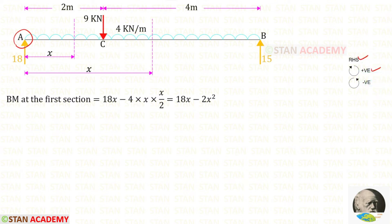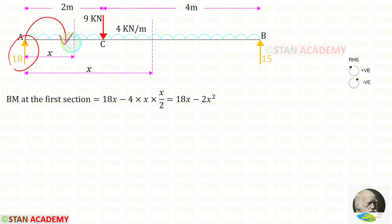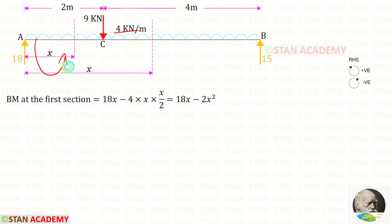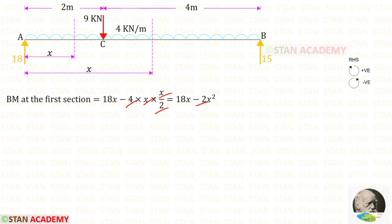For the first section, the moment about it: Ra is acting clockwise so it is positive and the distance is x, giving 18x. The UDL of 4 kN/m is acting anti-clockwise, so it is negative; for the UDL we multiply with the distance and distance divided by 2, giving 4/2 · x · x = 2x². So the bending moment for section 1 is M = 18x − 2x².